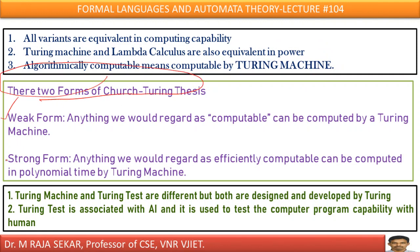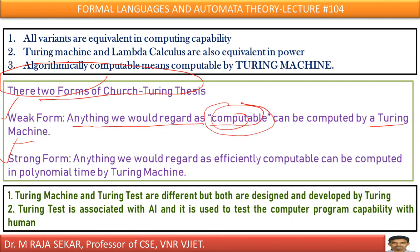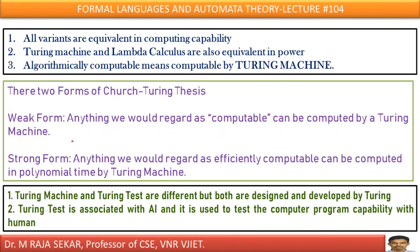There are two forms of the Church-Turing thesis: the first form is the weak form, and the second form is the strong form. Computation and computability are the core concepts — the heart of the Church-Turing thesis. The weak form states: anything we would regard as computable can be computed by a Turing machine.